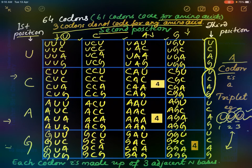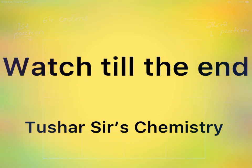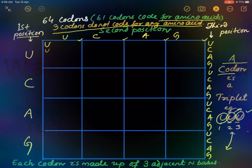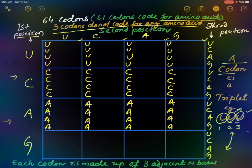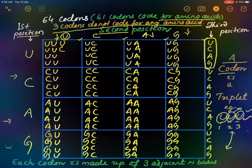Here we also have to write C repeatedly to fill in the remaining cells of the table. Then continuing with C, A, G, U — C, A, G — completing the codon table entries for all 64 codons.